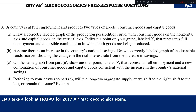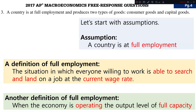Let's take a look at FRQ No. 3 for the 2017-18 macroeconomics exam. For this question, a total of 5 points are allocated. Starting with the assumption that a country is at full employment. For this question, you're going to use the definition at the bottom: when the economy is operating at the output level of full capacity.